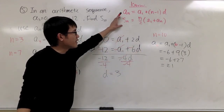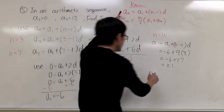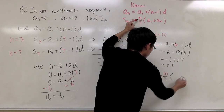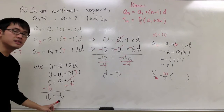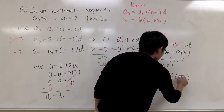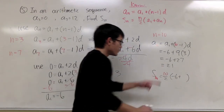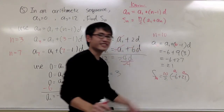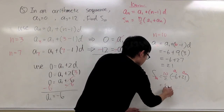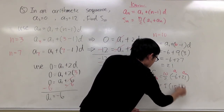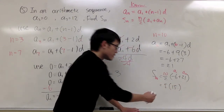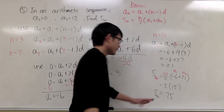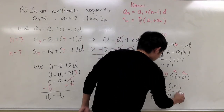Finally, I can plug everything into the Sn formula. S10 = (10/2) × (a1 + a10) = 5 × (negative 6 + 21) = 5 × 15 = 75. So S10 is equal to 75, and that's the final answer.